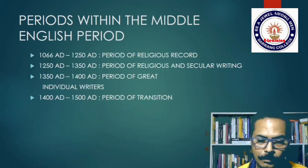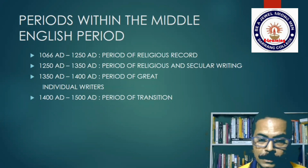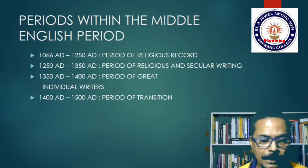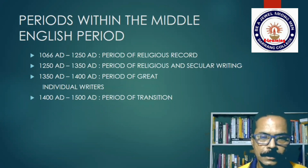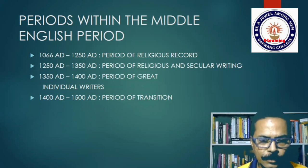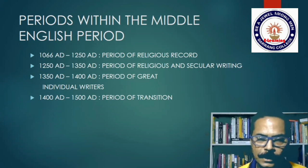The Middle English period within the medieval period runs from 1066 to 1500, starting with the landmark Norman Conquest — the last time England was conquered permanently by any outside force. From the literary point of view, this Middle English period is divided into four smaller sections. From 1066 to 1250 is called a period of religious record, meaning most writings during this time were only about religious topics.